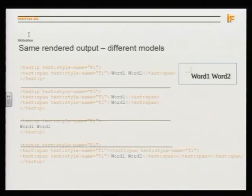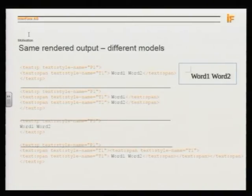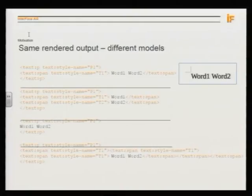One main problem motivating this talk is that in LibreOffice, if you have simple text — say 'word one, word two,' just two words with no different formatting — and you look inside the XML and the ODF model behind it, you get different presentations. All of these are valid representations according to the ODF specification: a paragraph with one text span, or two text spans, or no text spans, or a paragraph with many nested text spans, and so on. It's all valid.